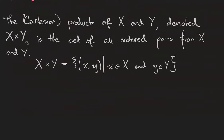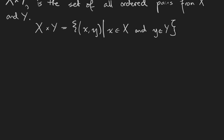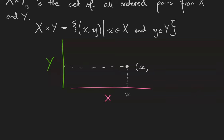We have one last operation: the Cartesian product of x and y, denoted x cross y, is the set of all ordered pairs from x and y. You can think of x cross y like the real number plane from algebra — one axis corresponds to the set x and the other corresponds to the set y, and a point in this plane corresponds to an element of x and an element of y, even though these aren't necessarily numbers.